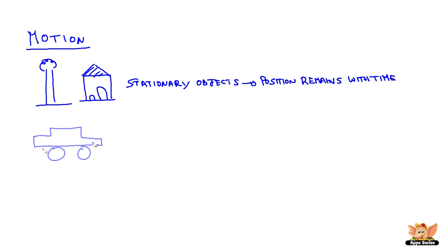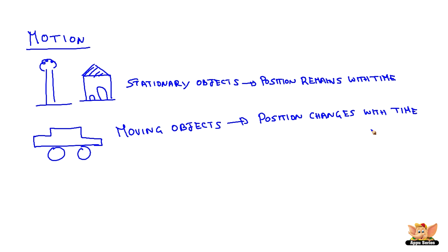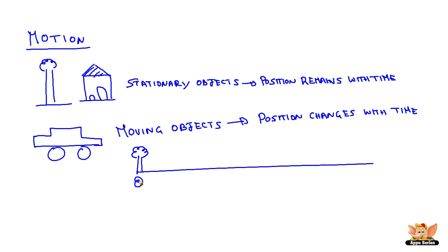In the moving objects, things like car, position changes with time. Let us take an example where a car is moving from a stationary object called a tree, which is at a position O, which is called a reference point. Any moving object moves with respect to a reference point, and the reference point is always a stationary object.